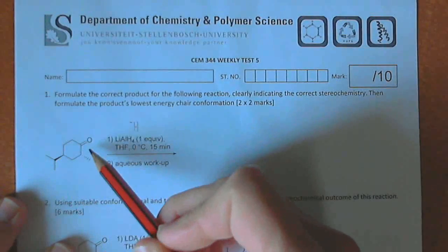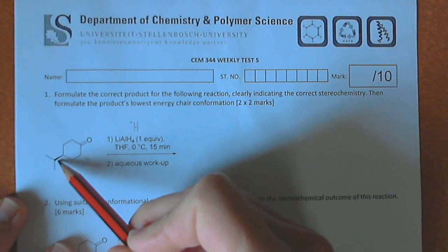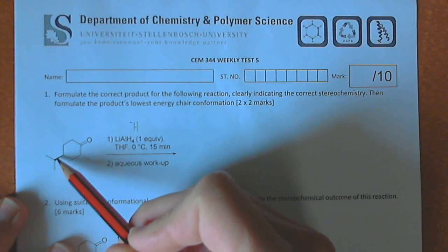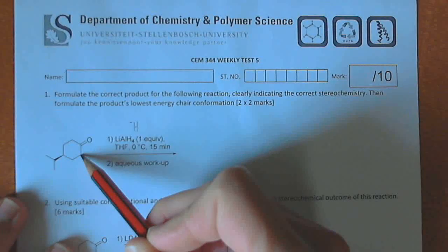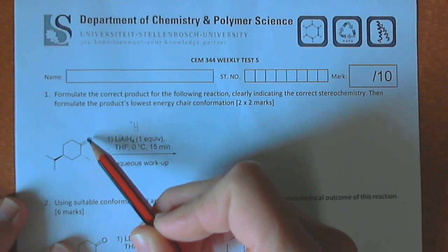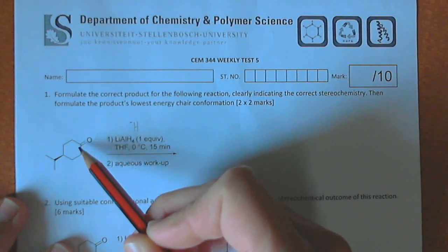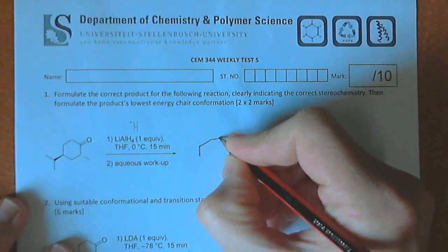will prefer an axial attack to put the alcohol that gets formed in the equatorial position. If we work around the ring, the isopropyl group being a locking group is equatorial up, so equatorial down, equatorial up. Equatorial will be down, so the OH which is going to end up equatorial is going to be down.